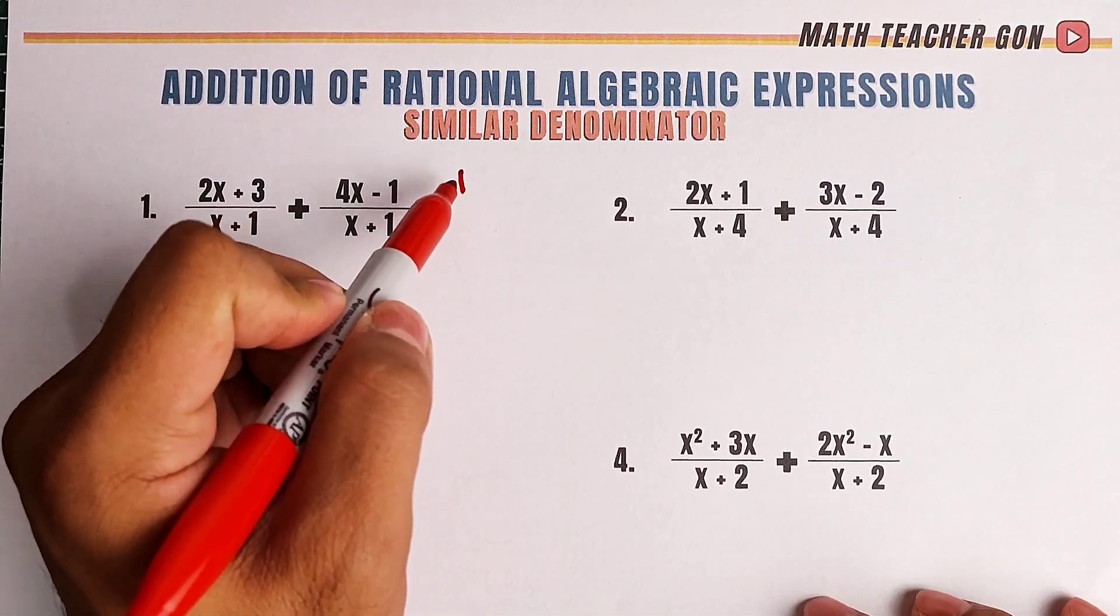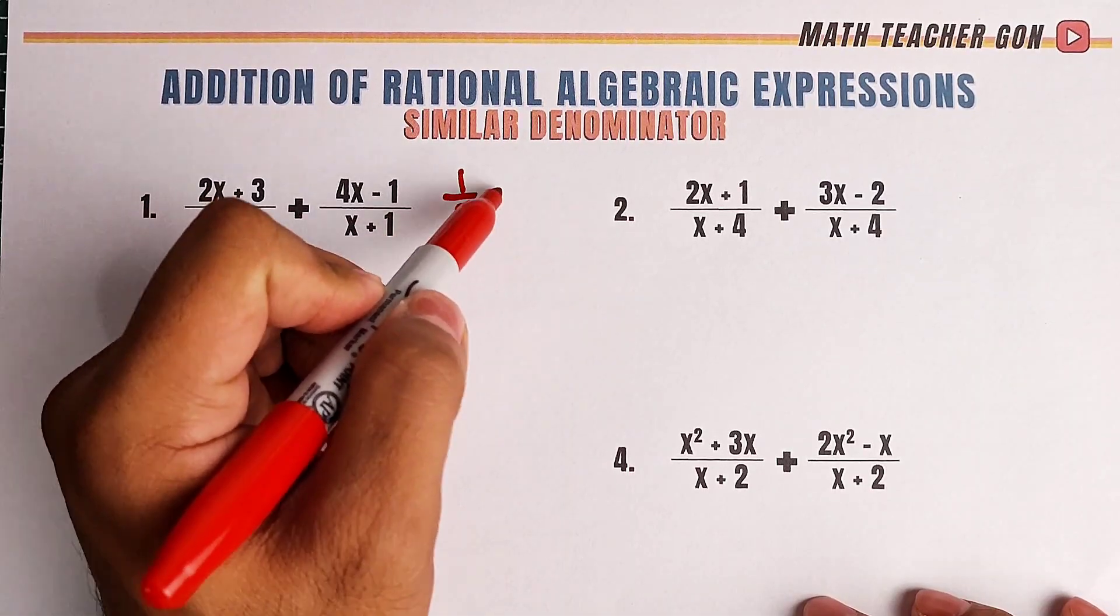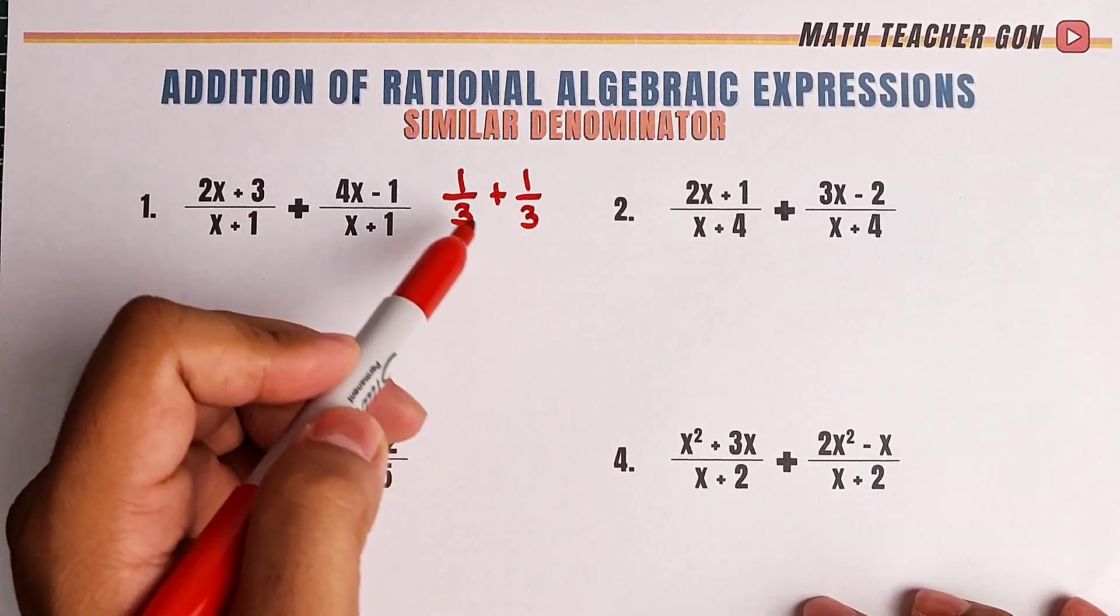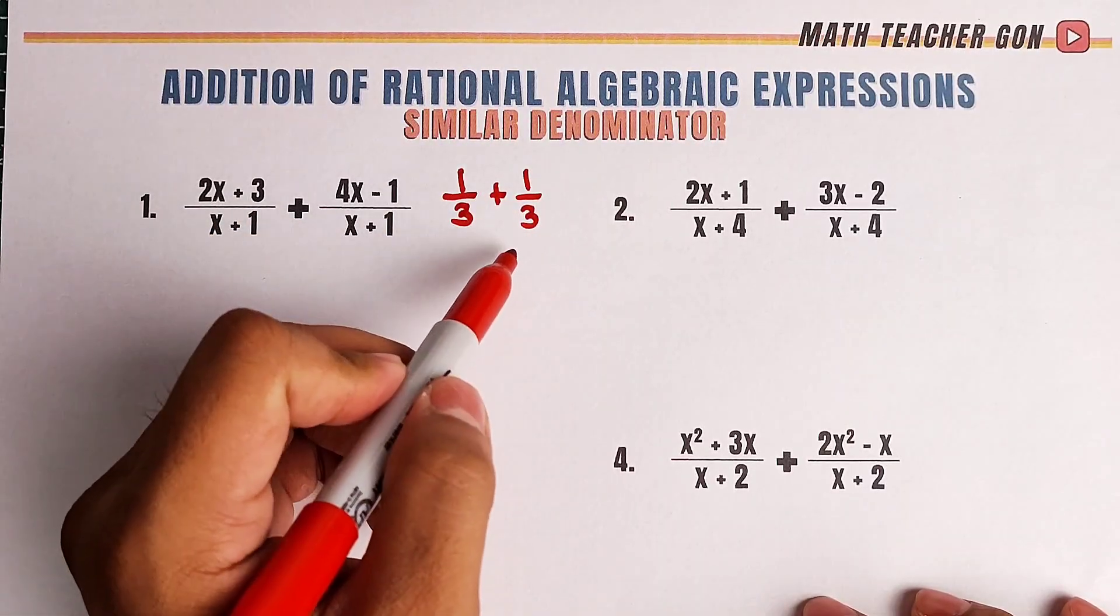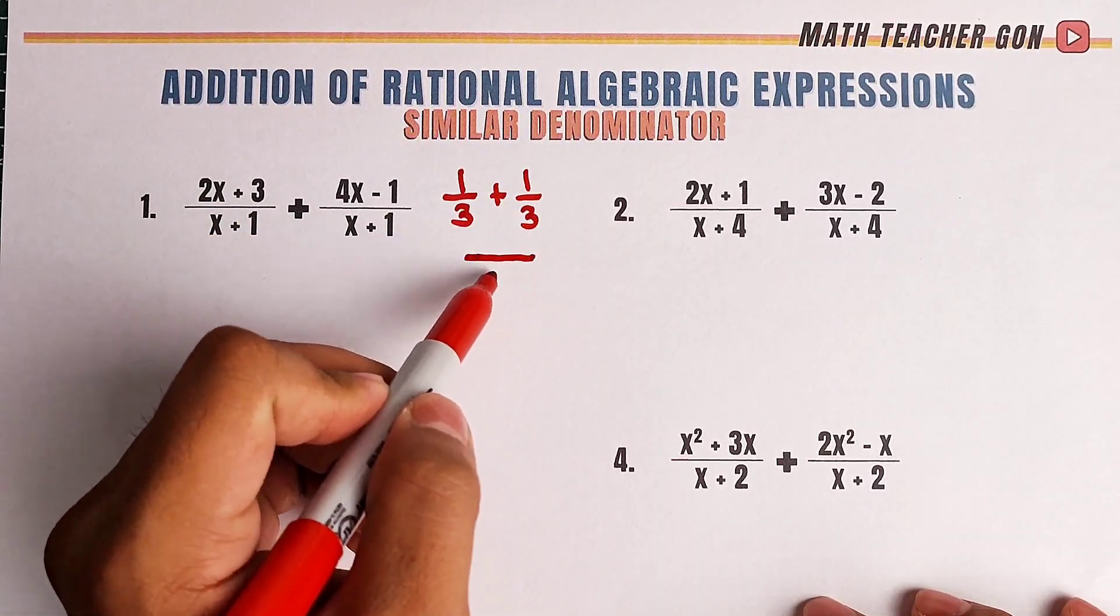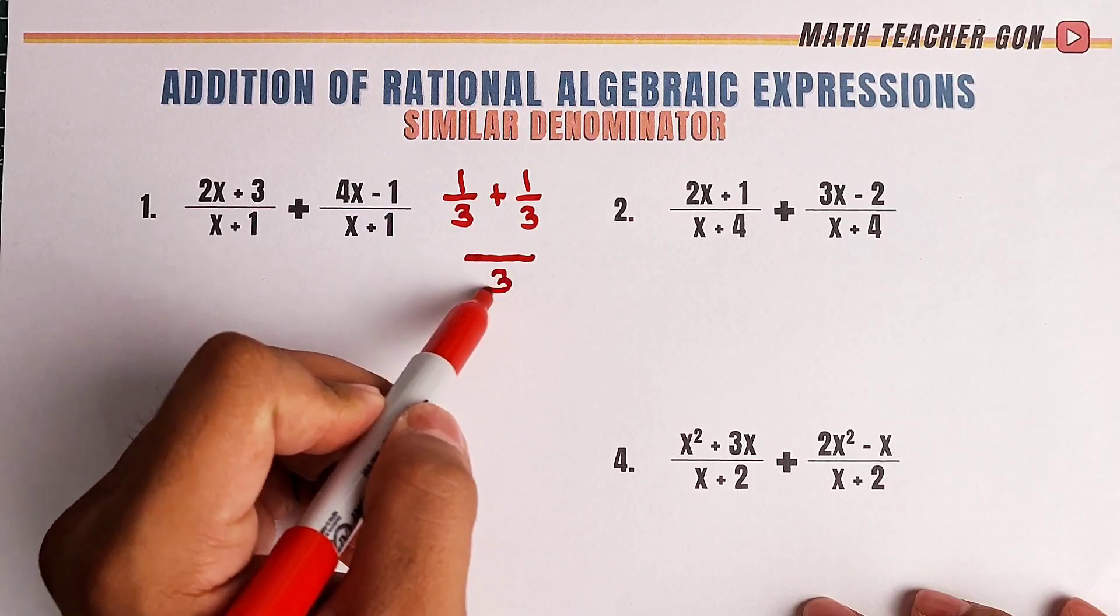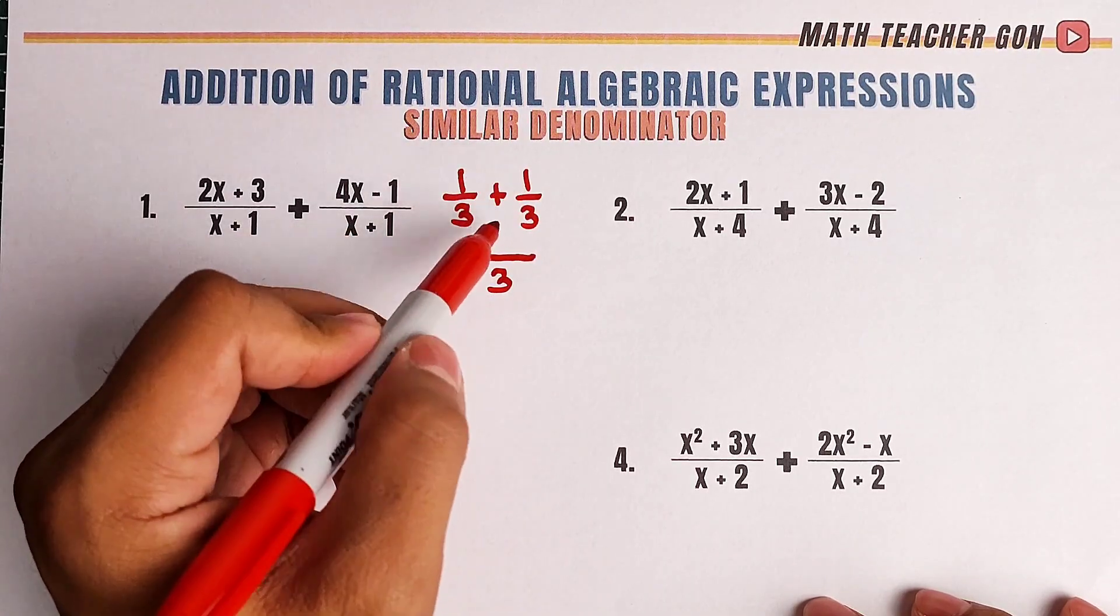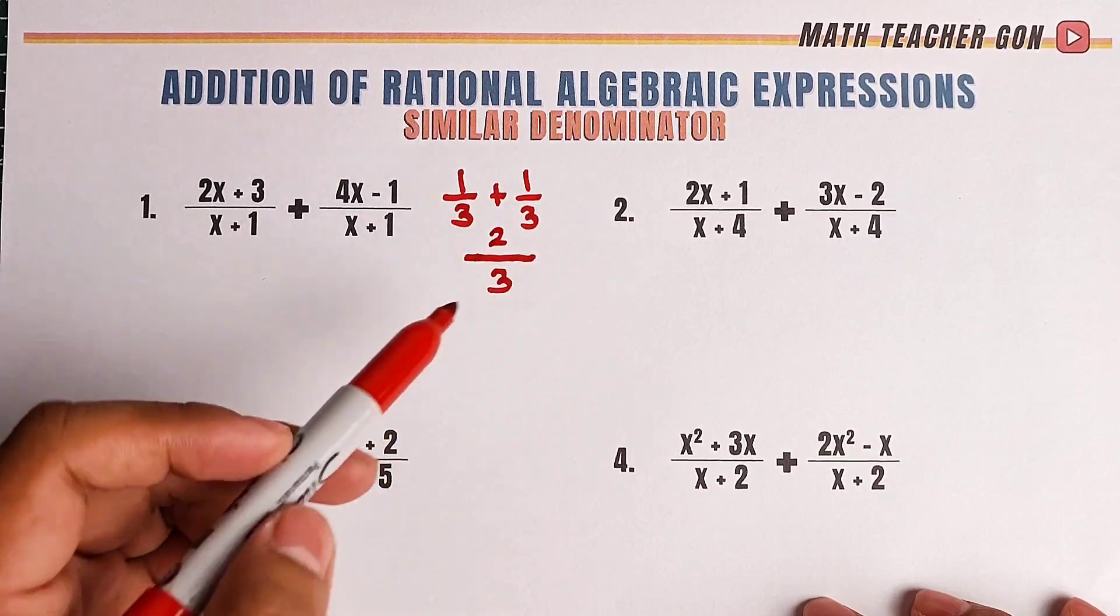Let's say we have 1 over 3 plus 1 over 3. To add these fractions with similar denominator, what you need to do is to copy the similar denominator, which is 3, then add the numerator, 1 plus 1, that is equal to 2, and the correct answer is 2 thirds.